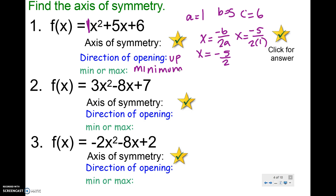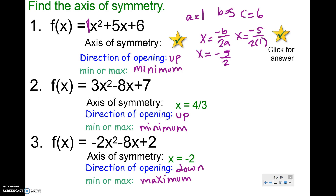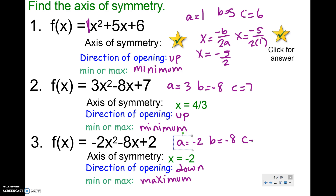Go ahead and try the next two. For the second example, a is 3, b is negative 8, and c is 7. Plugging into negative b over 2a gives x equals 4 over 3. The direction of opening is up because 'a' is positive, so it has a minimum. For the third example, a is negative 2, b is negative 8, and c is 2. Plugging in gives x equals negative 2, so the axis of symmetry is x equals negative 2. The direction of opening is down since 'a' is negative, and because it opens down, it has a maximum.